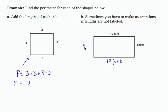This side length is 8 feet, meaning this side length is also 8 feet. So when I find the perimeter, I'm going to add 12 plus 8 plus 12 plus 8, and my units are going to be in feet.